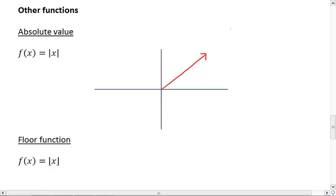However, when x is negative, the absolute value makes the output positive, so we get a line that goes straight up in the other direction. This is our absolute value function.